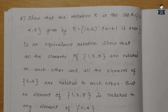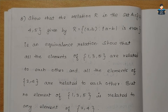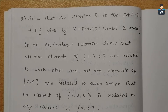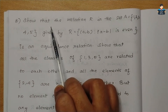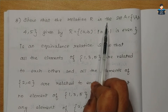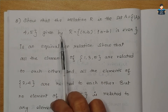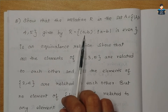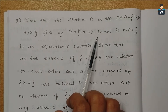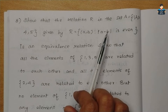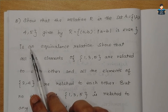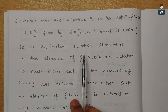Hello everyone, welcome to our channel. In this video, 12th standard NCERT Maths Chapter 1, Relations and Functions, Exercise 1.1, Question number 8. We are given the set A = {1, 2, 3, 4, 5} and the relation R = {(a, b) : |a - b| is even}. We need to show that R is an equivalence relation.